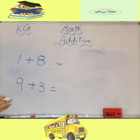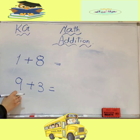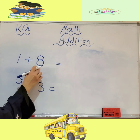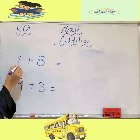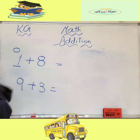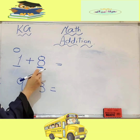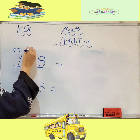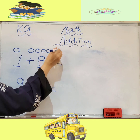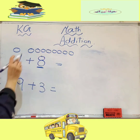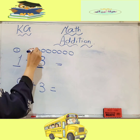Let's practice. I need you to answer with me. One plus eight — we will draw one circle here, and we will draw eight circles: one, two, three, four, five, six, seven, eight. Let's count all to take the sum: one, two, three.